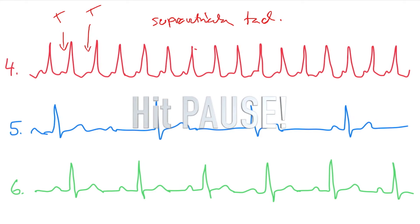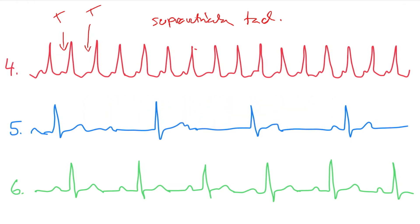What about this one? Five. I don't know if you can see it, but if I help you — that's a P, that's a P, that's a P, that's a P, that's a P. Is it a P block? Second degree? No, I think it's the complete one. Yes, yes — the third one. A P block, third degree. It's the third one because they are totally independent.